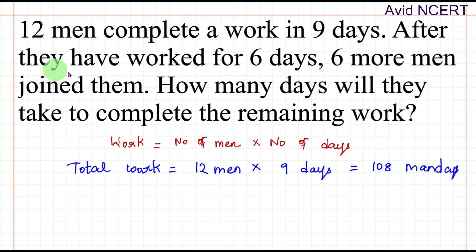From the next sentence, after they have worked for 6 days, so 12 men have worked for 6 days, which equals 72 man-days of work is complete. So work completed or work done equals 72 man-days.